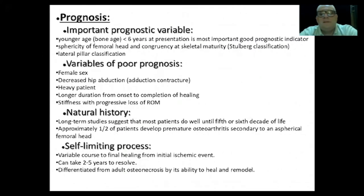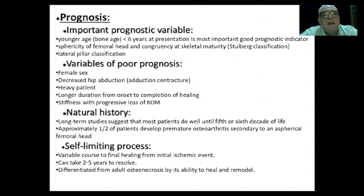Prognosis is dependent on the age of presentation or the bone age. Presentation before six years is most important for a good prognostic result. Sphericity of the femoral head and congruency at skeletal maturity — known by the Stulberg classification — are also key. Good lateral support of the lateral part of the femoral head, which prevents collapse of the subchondral bone, is assessed by the lateral pillar classification.